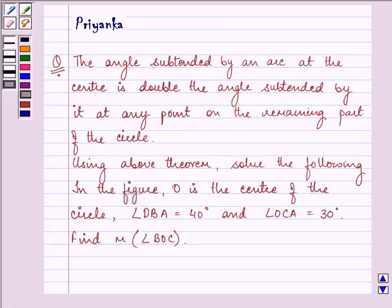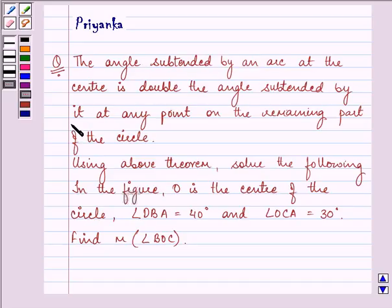Hello friends, how are you all doing today? My name is Priyanka and let us discuss this question. It says the angle subtended by an arc at the center is double the angle subtended by it at any point on the remaining part of the circle.